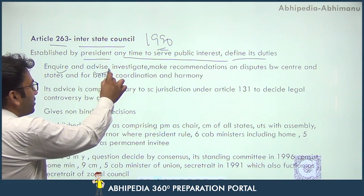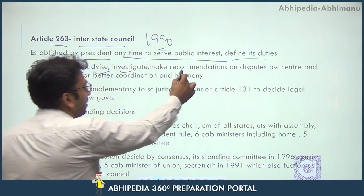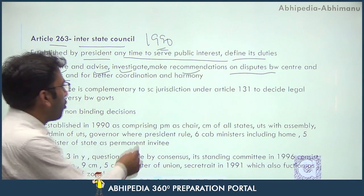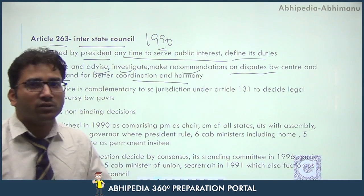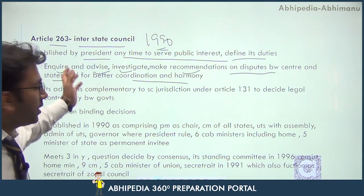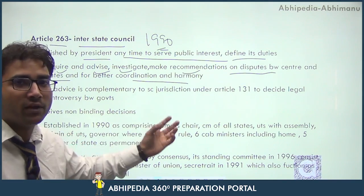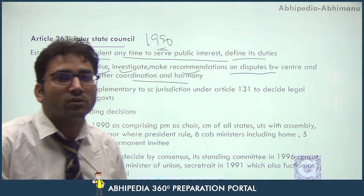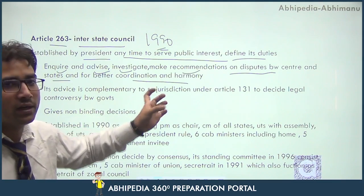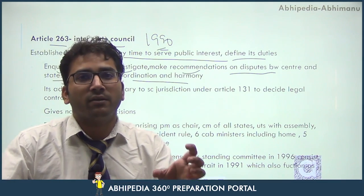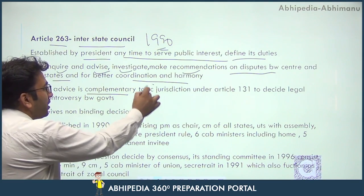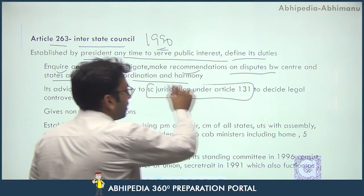The Interstate Council inquires, advises, and makes recommendations on disputes between the center and states for better coordination and harmony. This is the term of reference of the Interstate Council — it inquires into problems, advises on them, and gives recommendations on issues between the center and the states to ensure coordination and harmony between central and state governments.